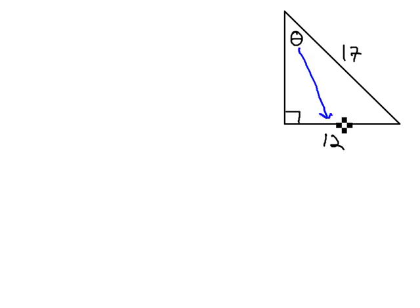12 is all the way across from the theta, so we call that the opposite side. And the 17 is the longest side across from the right angle, which we always call the hypotenuse side.